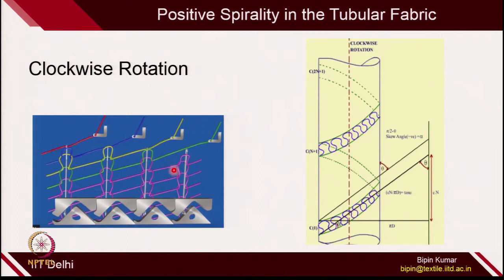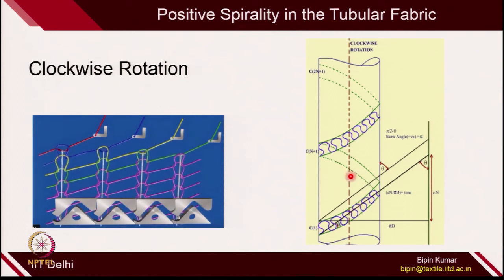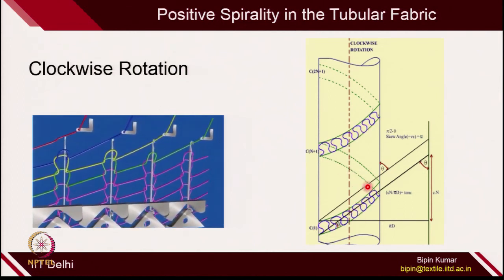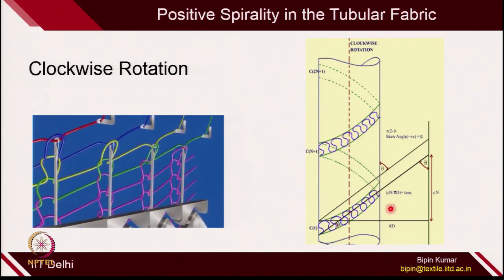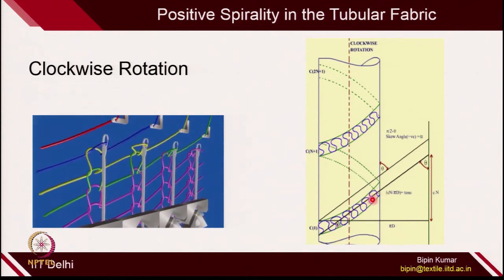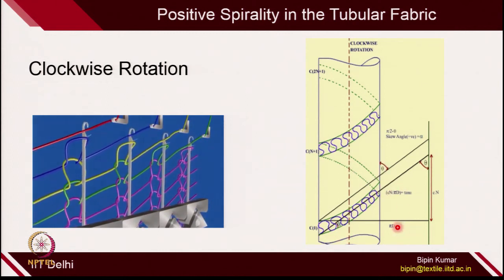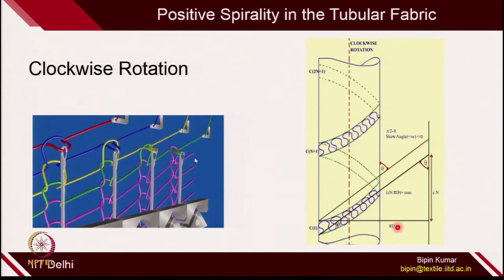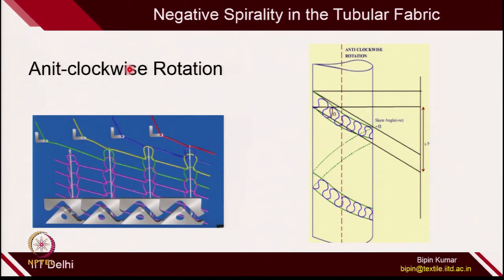Once the machine moves in clockwise rotation, you can see how each course will make a positive angle. When the cylinder moves in anticlockwise rotation, the courses will make a negative angle. So anticlockwise rotation provides negative spirality and clockwise rotation provides positive spirality. The direction of cylinder rotation and the number of feeder points are both very important.